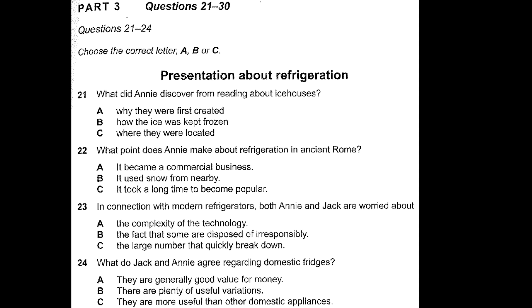Annie: The ancient Romans had refrigeration too. Jack: I didn't know that. Annie: Yes, pits were dug in the ground and snow was imported from the mountains, even though they were at quite a distance. The snow was stored in the pits, ice formed at the bottom, and both the ice and snow were sold. The ice cost more than the snow, and my guess is that only the wealthy members of society could afford it. Jack: I wouldn't be surprised. I also came across an article about modern domestic fridges.